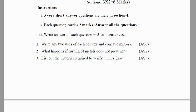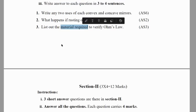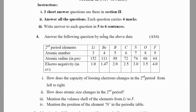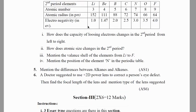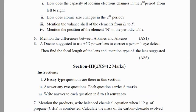Government model paper: Section 1 — write two uses each of convex and concave mirrors. Make note of the pattern: uses. What happens if rusting of metal is not prevented? List out materials required to verify Ohm's law — materials required is also important. Section 2: answer questions using the given data from the periodic table. Mention the difference between alkanes and alkenes. A doctor suggested using a plus 2D power lens to correct a person's eye defect — find the focal length and mention the type of lens suggested.